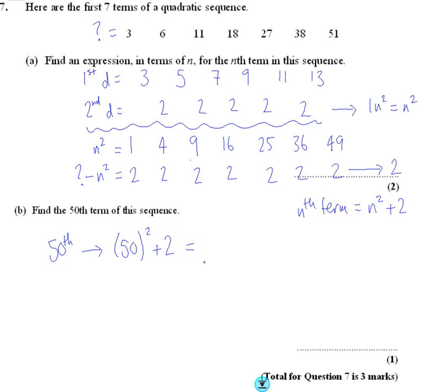So 50 times 50 is 5 times 5 is 25, 2 zeros, add 2. So if you wanted to carry that sequence on for 50 different numbers, it would be 2,502.